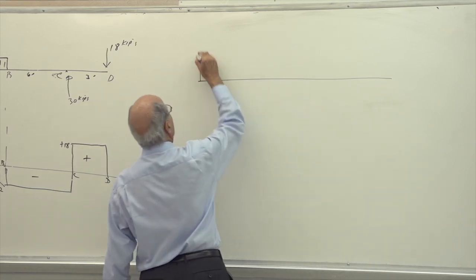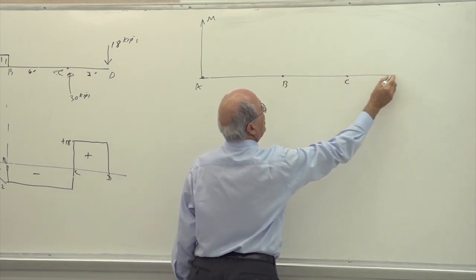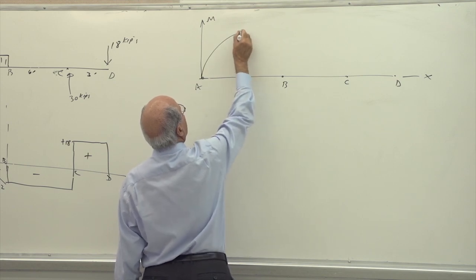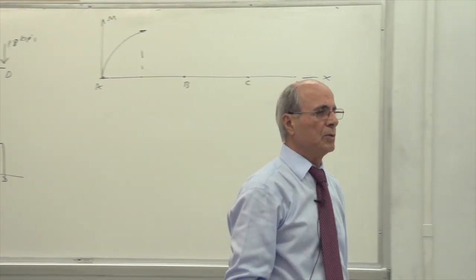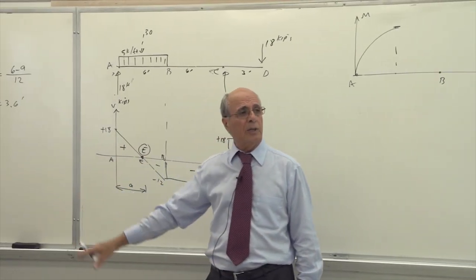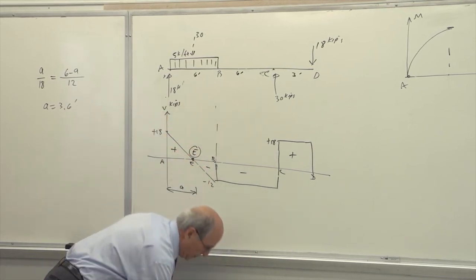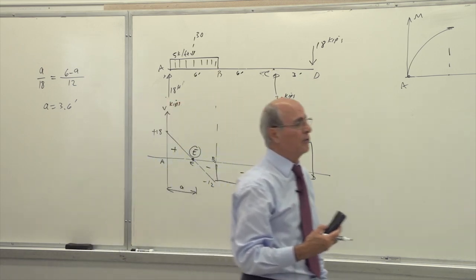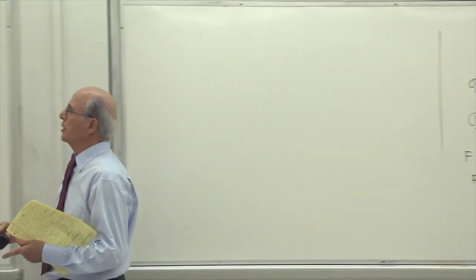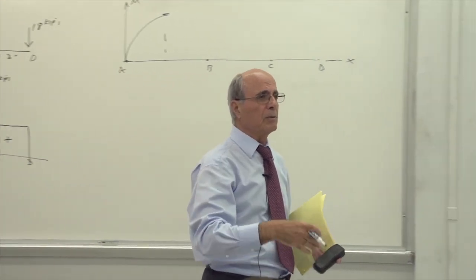Here is the moment diagram: start at zero at point A. From A to E, 3.6 feet, it is a parabola going up. I can calculate the moment at E by cutting the beam at 3.6 feet and applying equilibrium: sigma M at E equals zero. So 18 times 3.6 negative, plus 18 times 1.8, plus M_E equals zero. M_E equals 32.4 kip-feet. Alternatively, using the area method: area of the triangular shear region = 18 times 3.6 divided by 2 = 32.4 — same result.